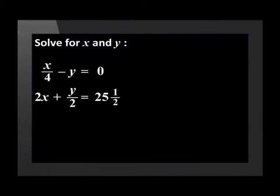Well the substitution method certainly makes it easier to solve simultaneous equations. Use what you have learned with Omashni to solve this next system of simultaneous equations. We have to solve for x and y and are given the equations x over 4 minus y equals 0 and 2x plus y over 2 equals 25 and a half. The first thing we need to do is to rewrite one of the equations to get one of the variables by itself. In the first equation we can add y to both sides and we will get x over 4 equals y. We call that equation 1.